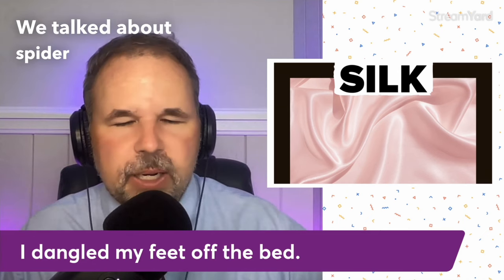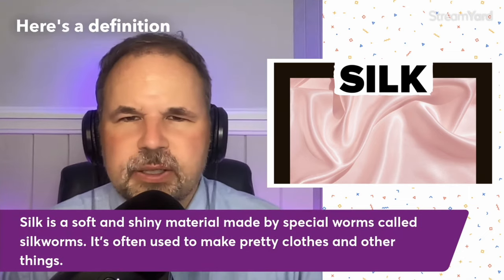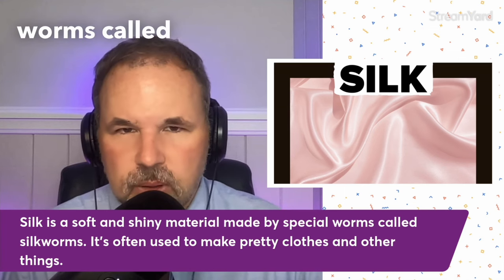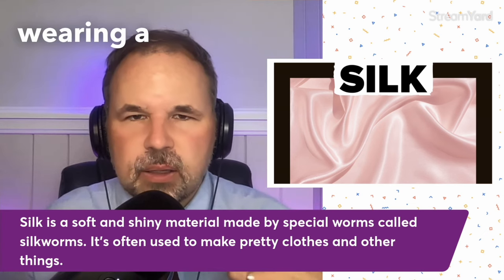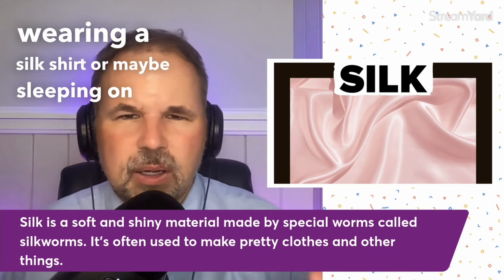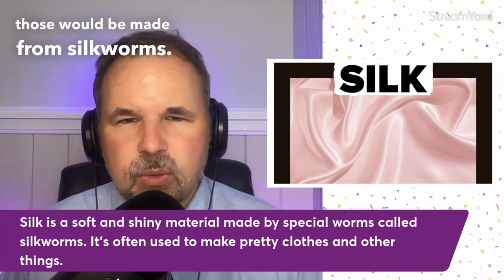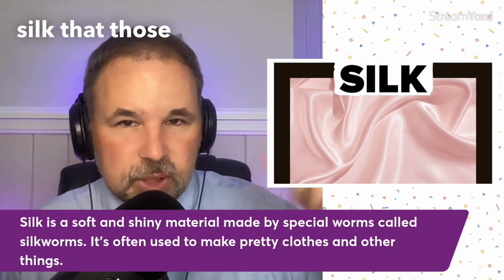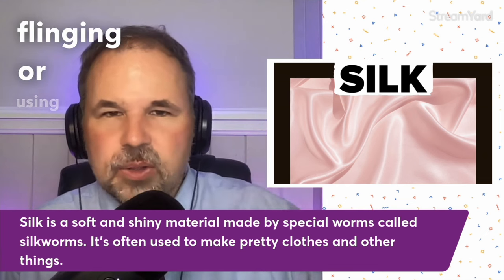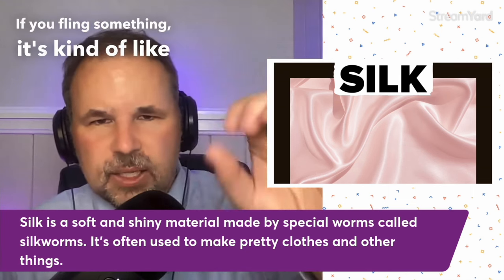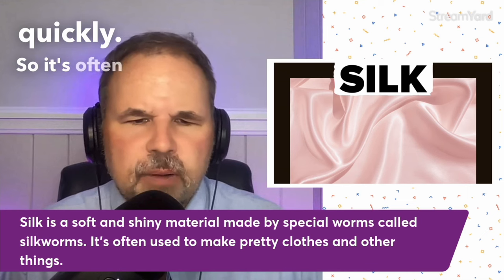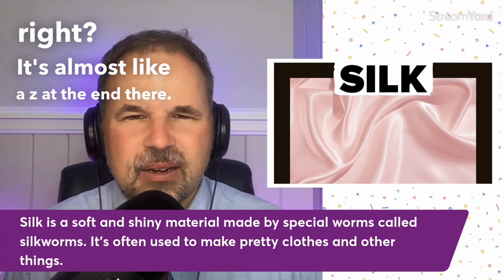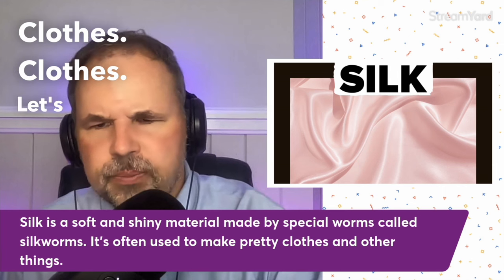The next word is silk. We talked about spider webs being made from silk. Silk is a soft and shiny material made by special worms called silkworms. So if anybody is wearing a silk shirt or maybe sleeping on silk sheets, those would be made from silkworms. It's often used to make pretty clothes and other things. Clothes — not easy to say, right? It's almost like a Z at the end there.